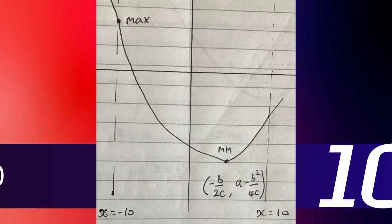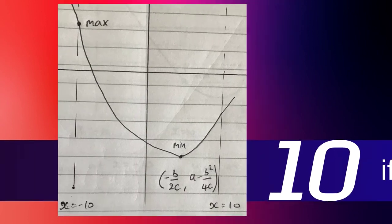The penultimate case: if the turning point has an x-value between 0 and 10, we've switched things around. The maximum is now when x equals minus 10, giving 100c minus 10b plus a, and the minimum is still the turning point value a minus b squared over 4c.